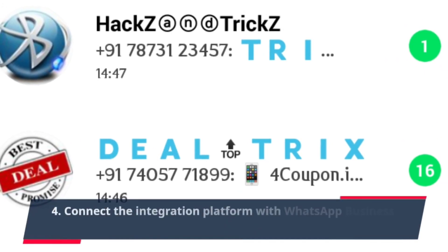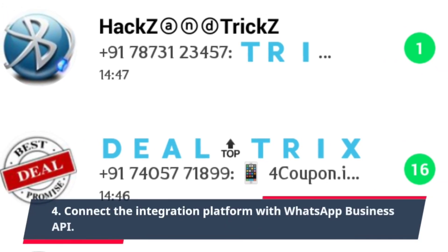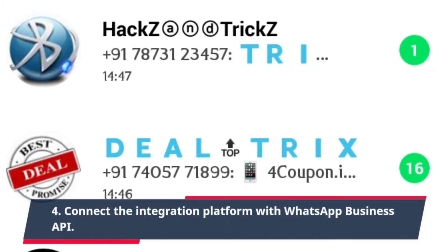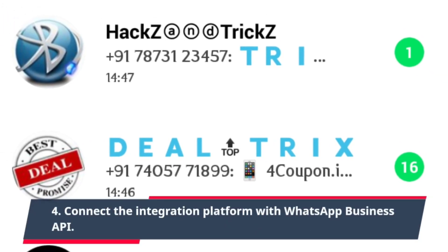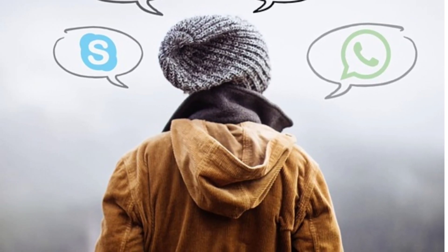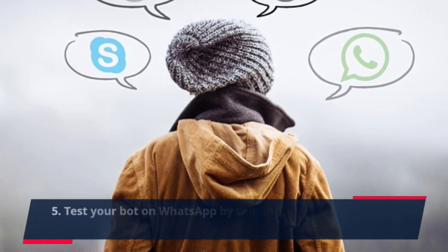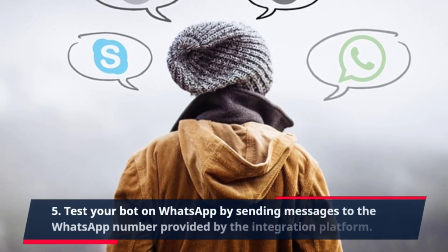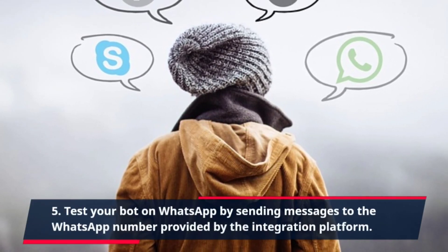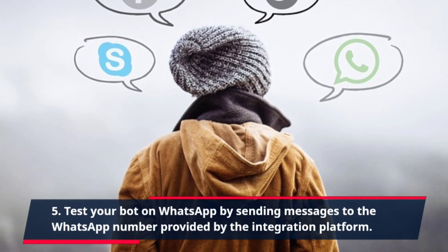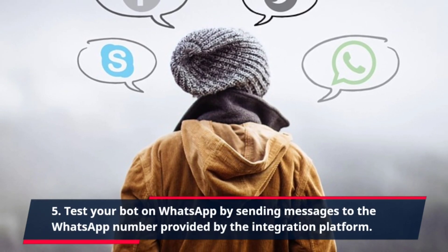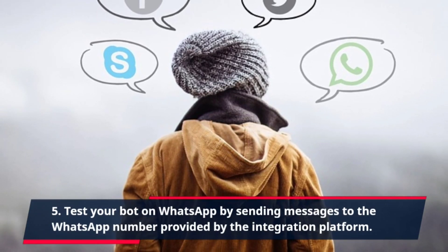Step 4: Connect the integration platform with WhatsApp Business API. Step 5: Test your bot on WhatsApp by sending messages to the WhatsApp number provided by the integration platform.